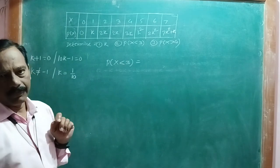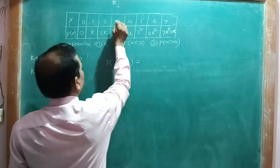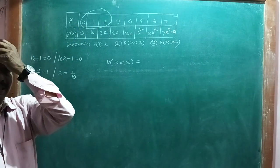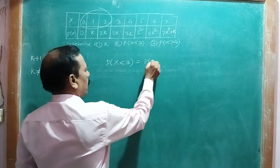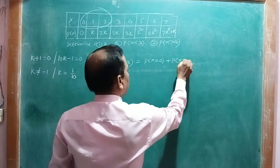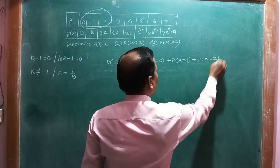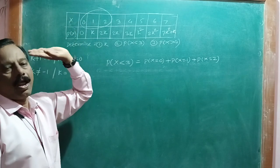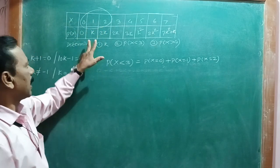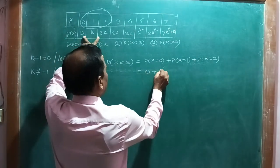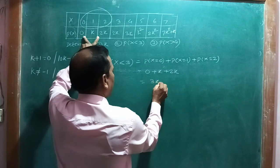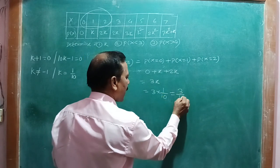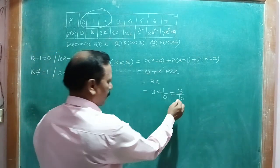The second part asks for P(X < 3). Values less than 3 are x = 0, 1, 2. So P(X < 3) = P(X=0) + P(X=1) + P(X=2) = 0 + k + 2k = 3k. Substituting k = 1/10, we get 3 × (1/10) = 3/10. The answer is 3/10.